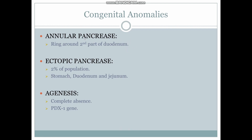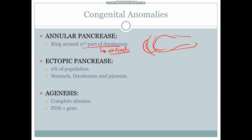Annular pancreas is when the pancreas forms a ring around the second part of the duodenum. As you can see here, the pancreas forms a ring around the duodenum. In certain cases this ring can be too tight, obstructing the second part of the duodenum. So it is common to see duodenal obstruction in these patients.